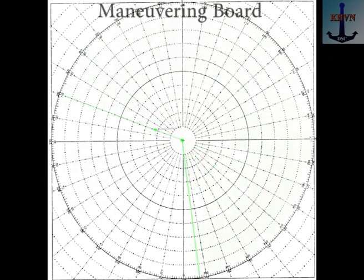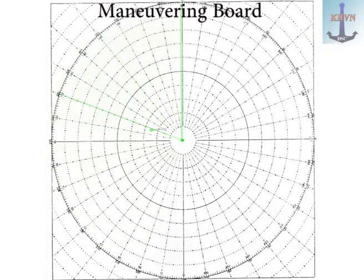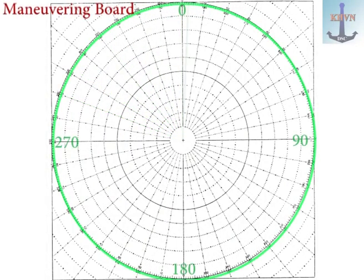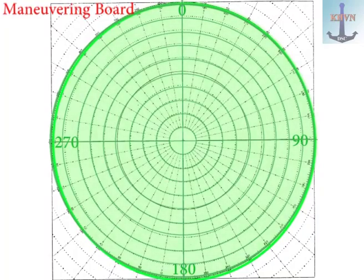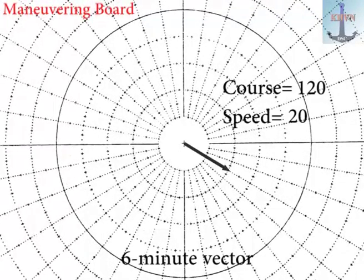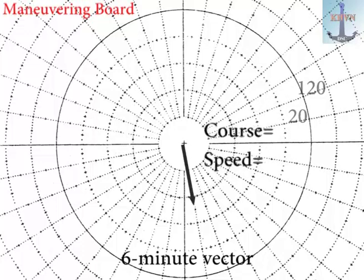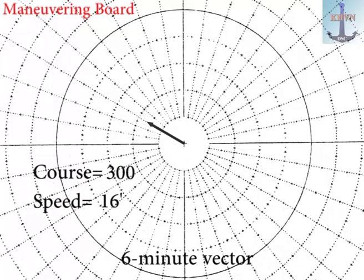Maneuvering board, MB. So, MB, as it was told above, is imitation of the radar 12 miles screen on the board. Maneuvering board grid is marked in direction - the circle is divided into 360 degrees - and in distance with the price of division 1 cable. There are 10 circles marked in nautical miles. There are no problems to draw any 6 minutes vector characterizing any movement with any course and speed.